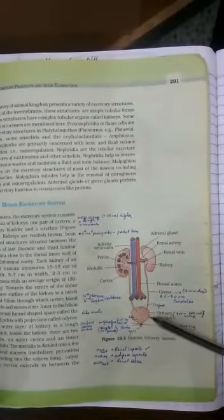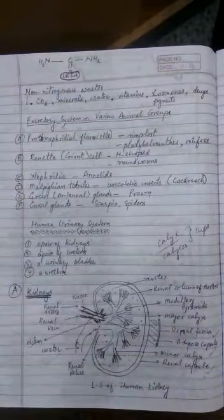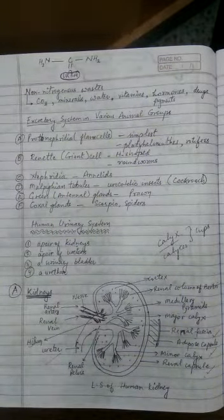We discussed the human urinary system structure from the NCERT, which consists of a pair of kidneys, a pair of ureters, a single urinary bladder and urethra. We also learned about the renal artery and renal veins which supply vascular tissue to the kidneys.